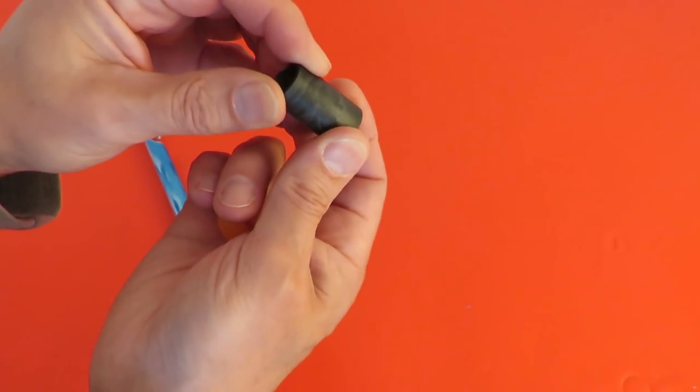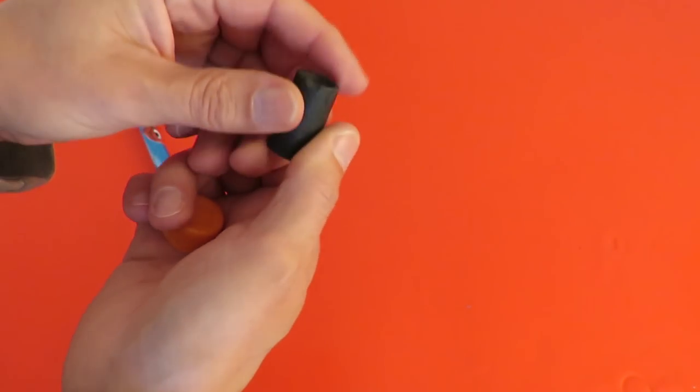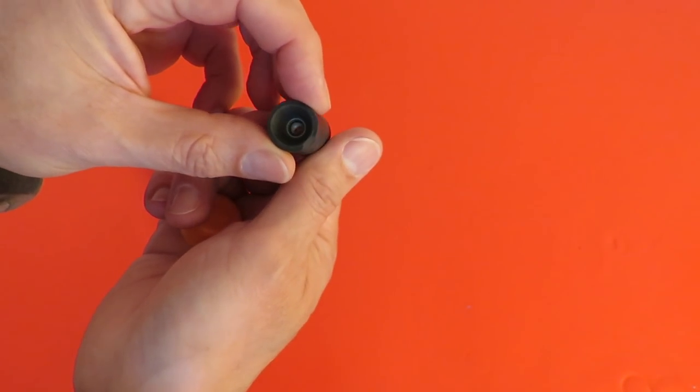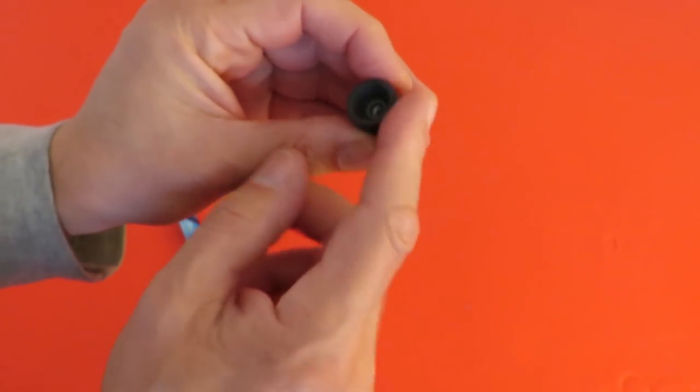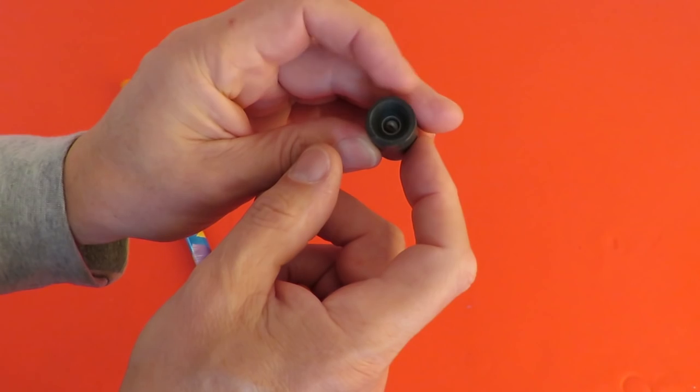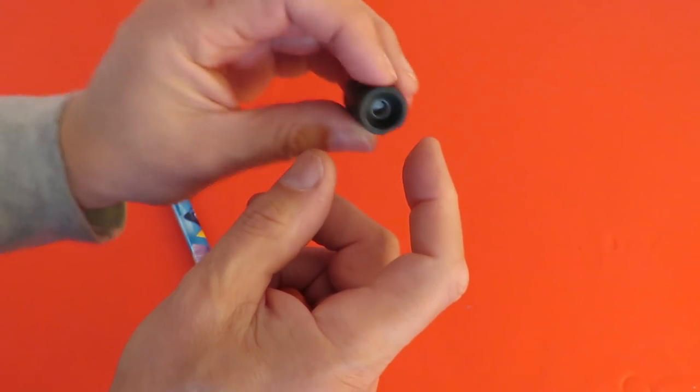This is... I was going to say rubber but it's not. It's a bit harder than rubber. There's a little sort of flappy valve in that end. Valve or reed.